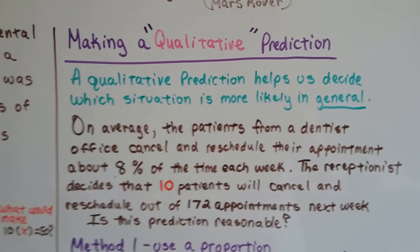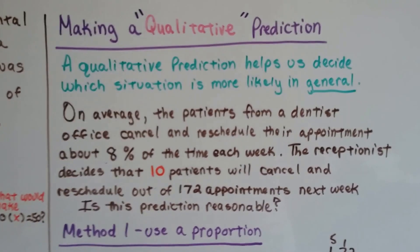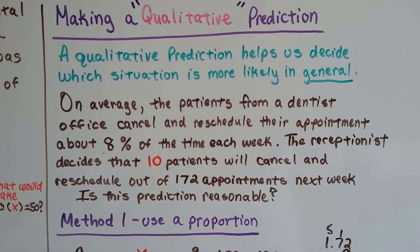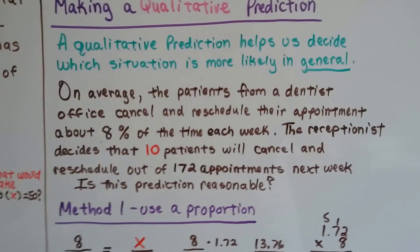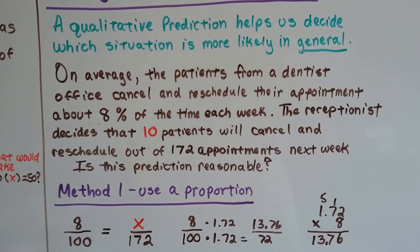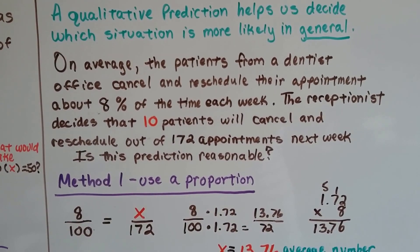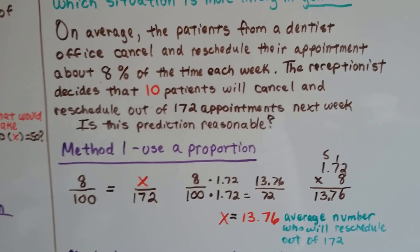Making a qualitative prediction. A qualitative prediction helps us decide which situation is more likely in general. So on average, the patients from a dentist's office cancel and reschedule their appointment about 8% of the time each week. So the receptionist decides that 10 patients will cancel and reschedule out of 172 appointments next week. Is this prediction reasonable?